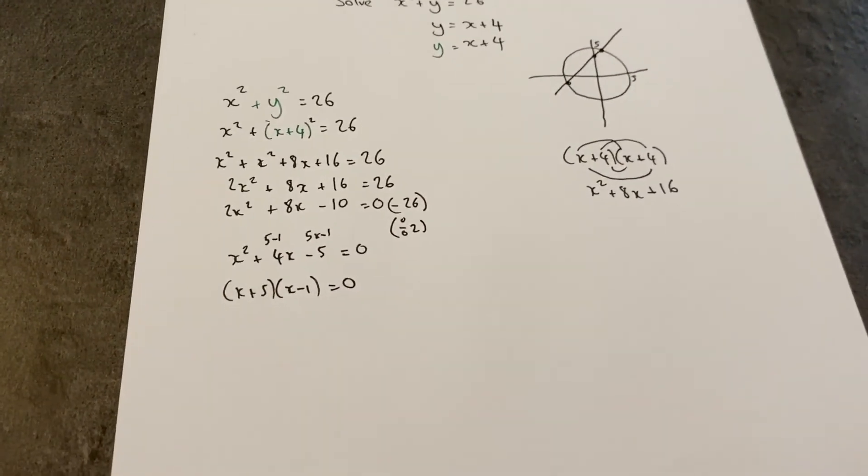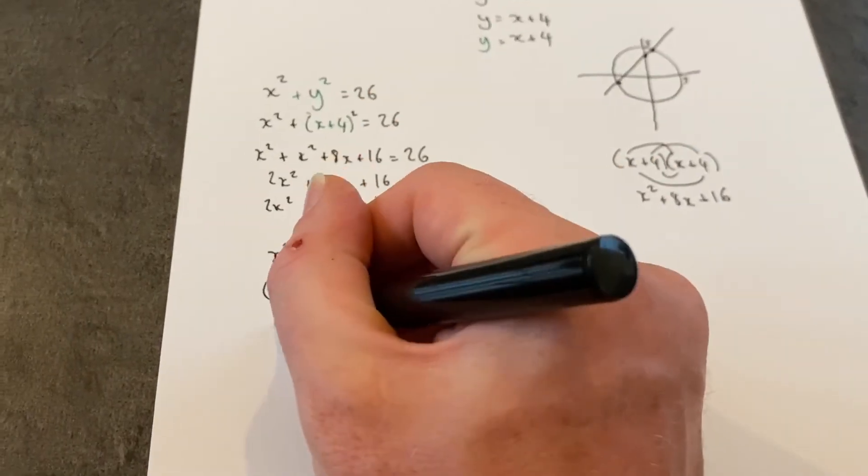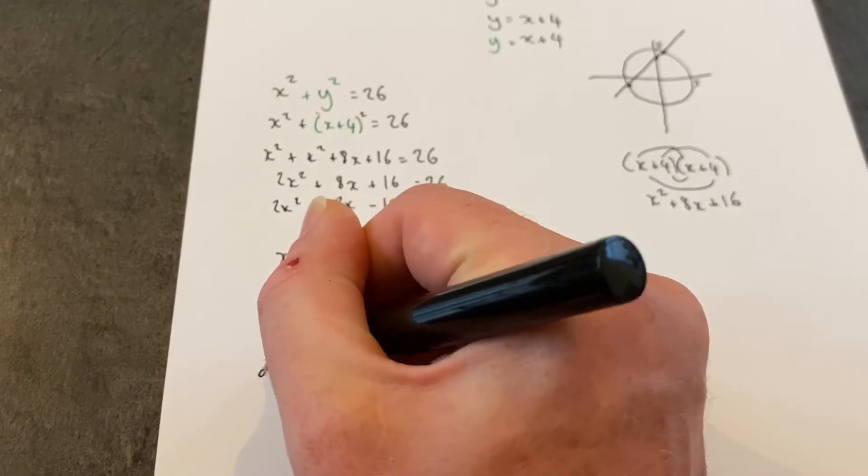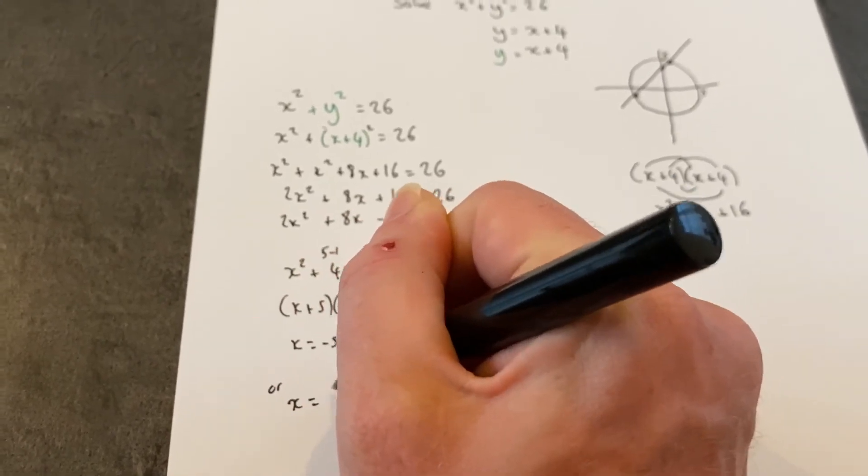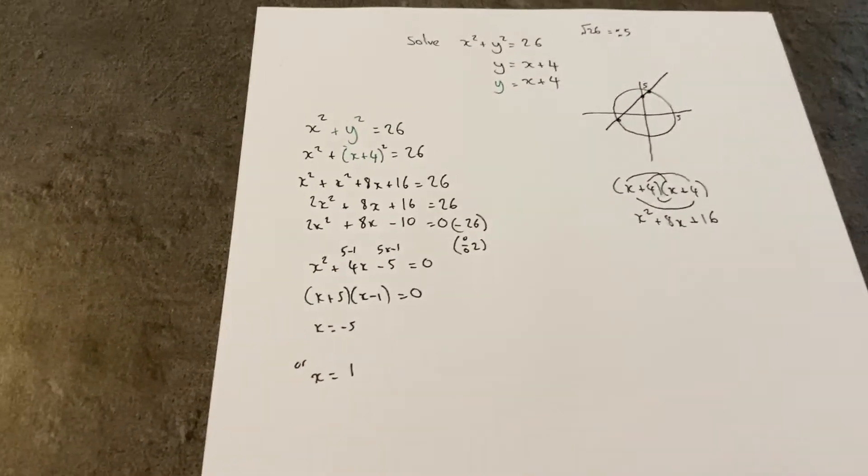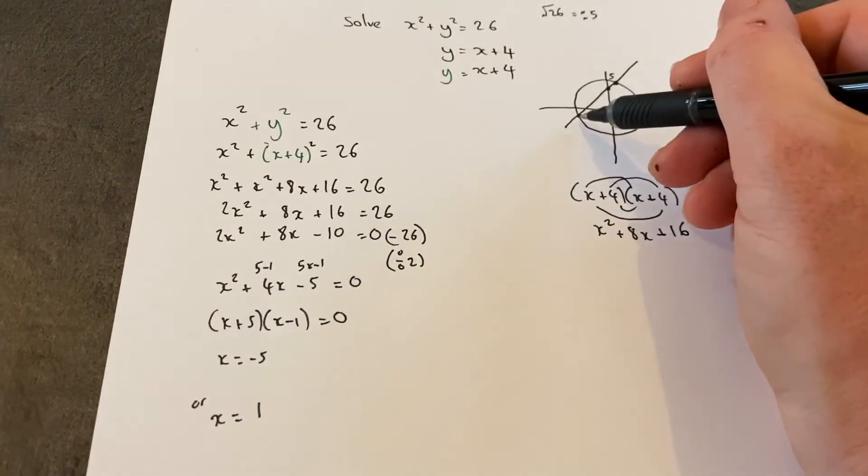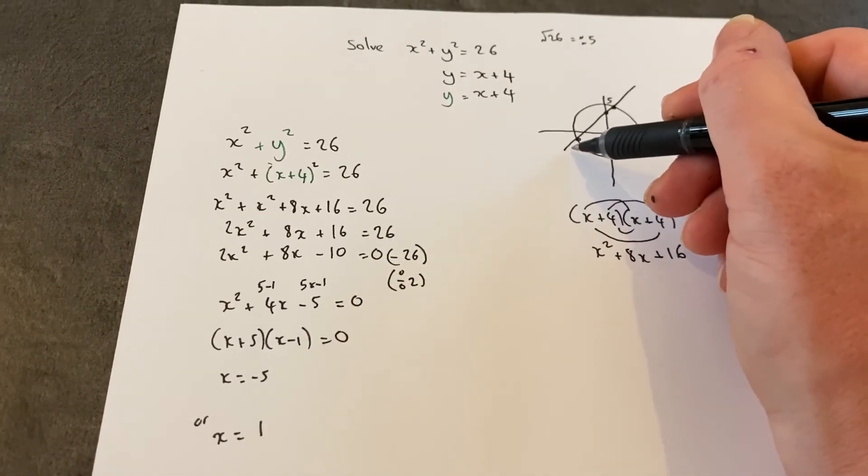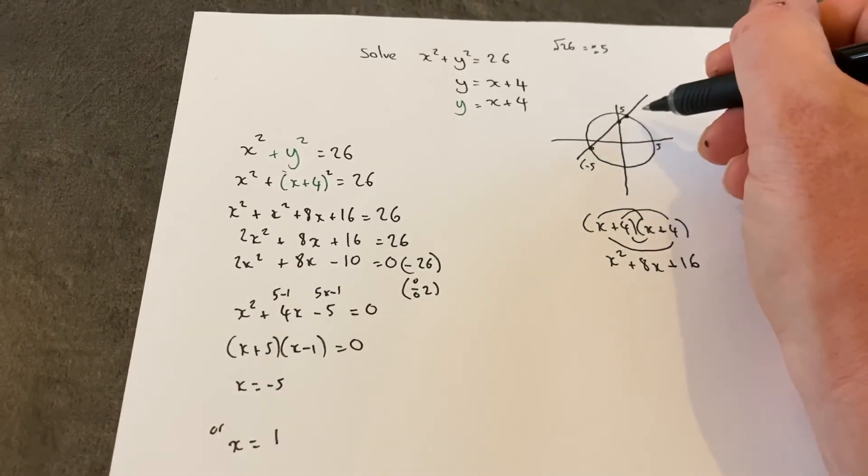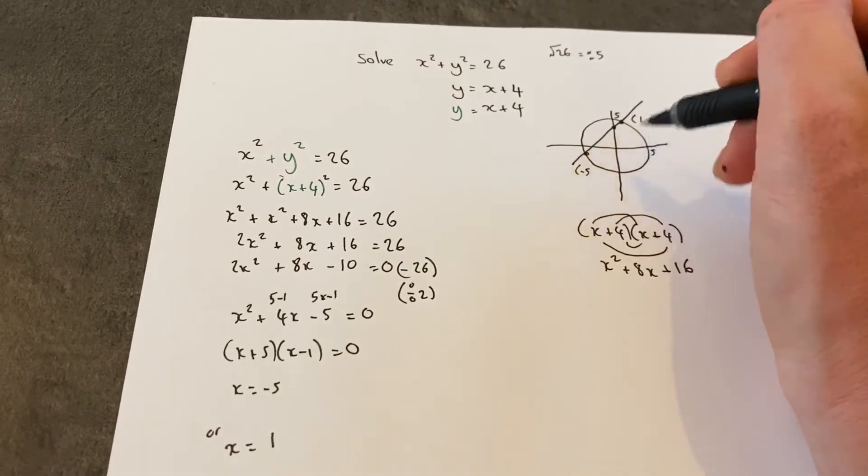To solve this, we just reverse the signs, so x equals negative 5 or x equals positive 1. I found the two coordinates: the one on the bottom left is where x equals minus 5, the top quadrant is where x equals 1.